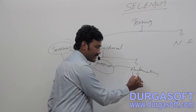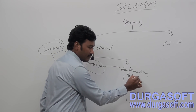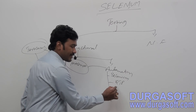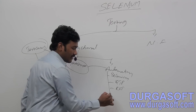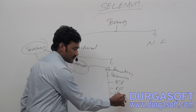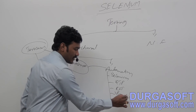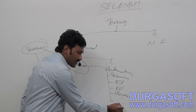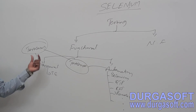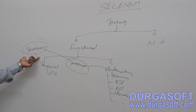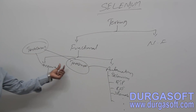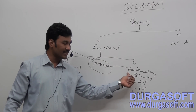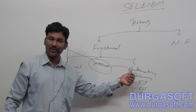That tool can be Selenium, it can be QTP, it can be RFT, it can be Ranorex — n number of tools are available. The process of converting manual test cases to Test Scripts with the help of some automation tool is nothing but Automation.